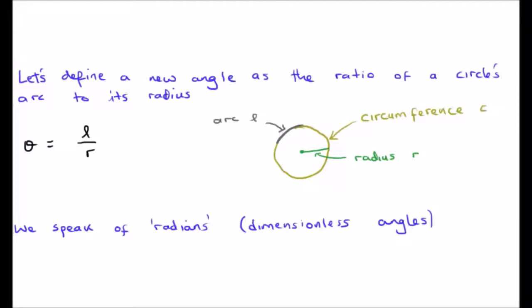We do this by saying we define an angle as the ratio of a circle's arc length to its radius. This is theta is equal to L, the arc length, over the radius.